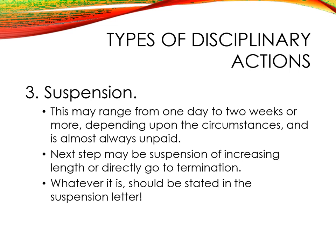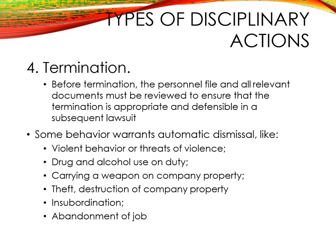The third element is suspension, which may range from one day to a few weeks, is almost always unpaid, and depends on the circumstances. The next step may be suspension of increasing length or directly termination, and this should be stated in the suspension letter. The final element is termination. Before termination, the personal file and all relevant documents must be reviewed to ensure it is appropriate and defensible in a subsequent lawsuit. Some behaviors warrant automatic dismissal, such as violent behavior or threats of violence, drug and alcohol use on duty, carrying a weapon on company property, theft, destruction of company property, insubordination, and abandonment of job.